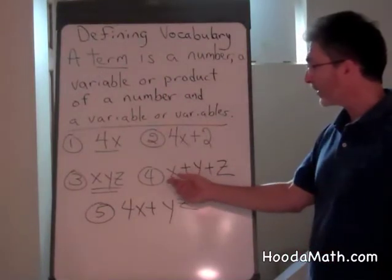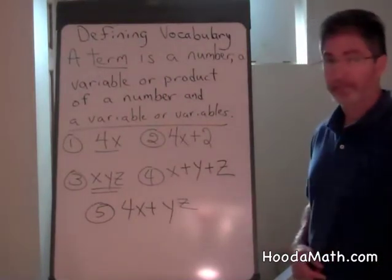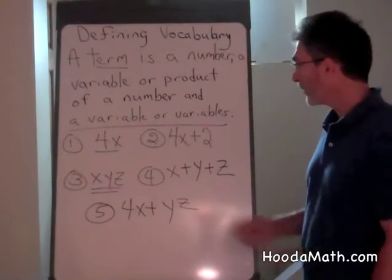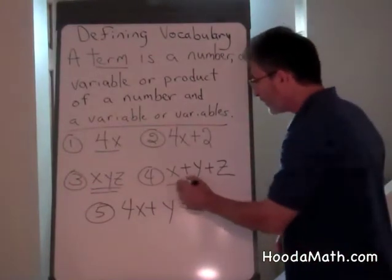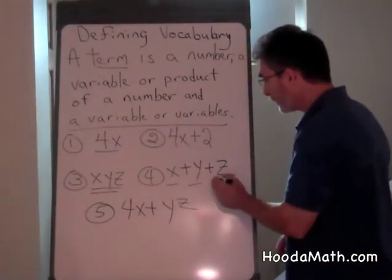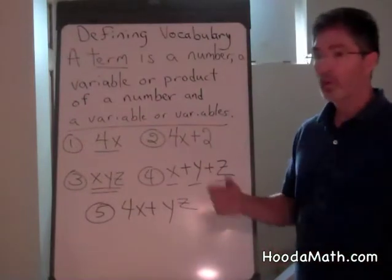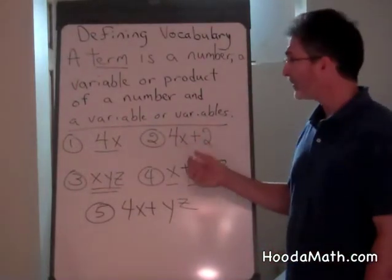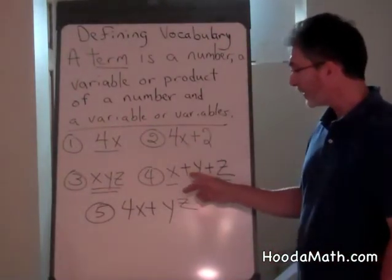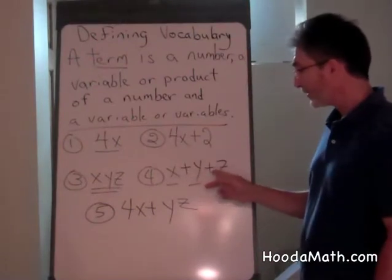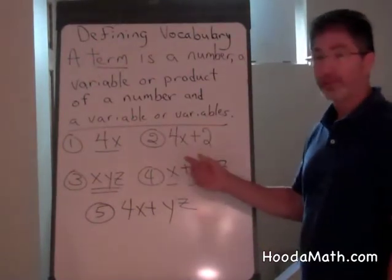How many terms do you think are here? Correct. Three terms. x is one term, y is another term, z is another term. When terms are separated by an addition sign, then you count them separately.